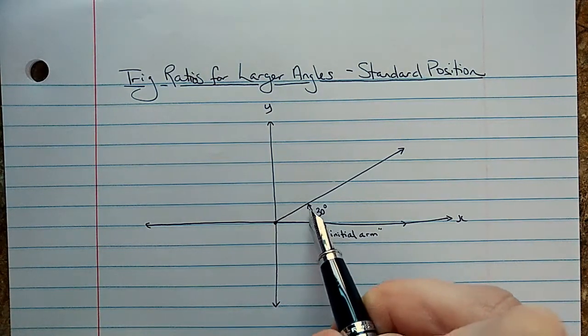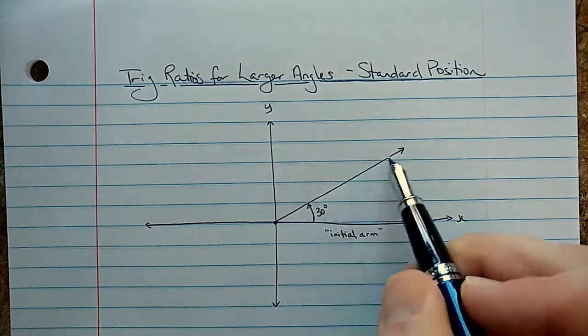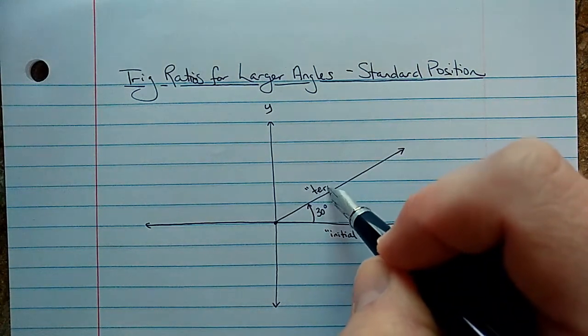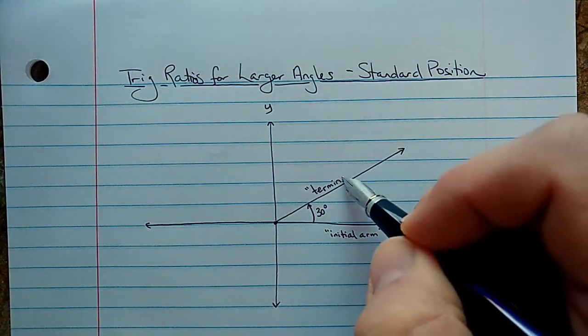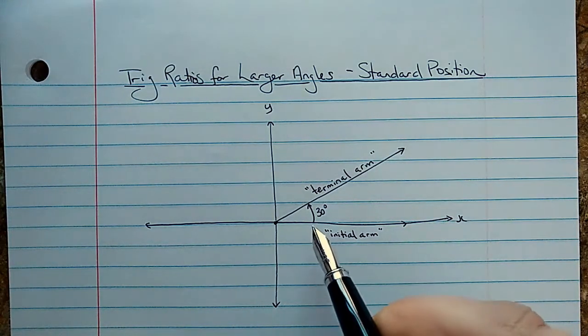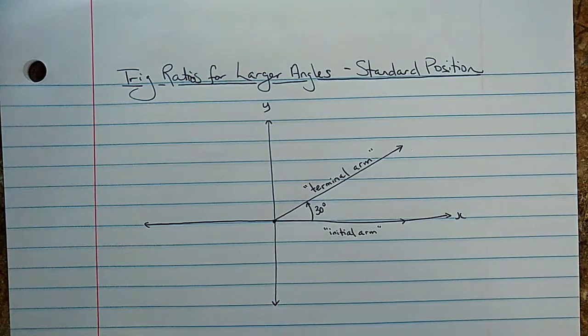The angle 30 degrees is the angle between the initial arm and this other one that we've drawn up here, which is called the terminal arm. That's where it ends. So starting and ending arms. This is the 30 degree angle drawn in standard position.